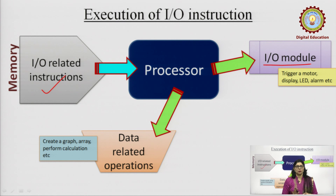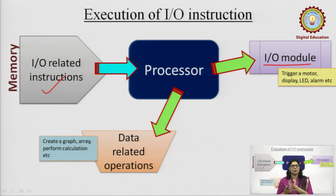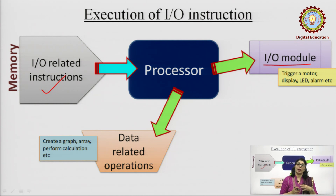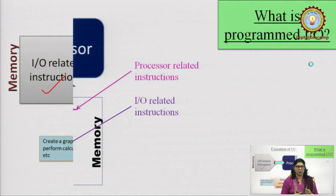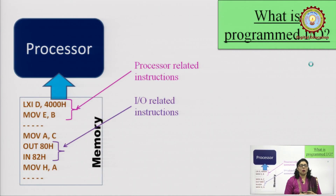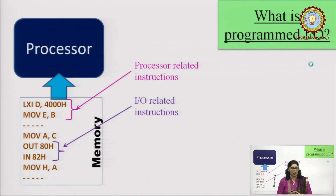How this is being done — the processor also has to check its hardware at all times, whether any hardware has generated an interrupt request or not. This brings up the question: what is programmed I/O? With the help of programmed I/O, the microprocessor can interface with the outside world.